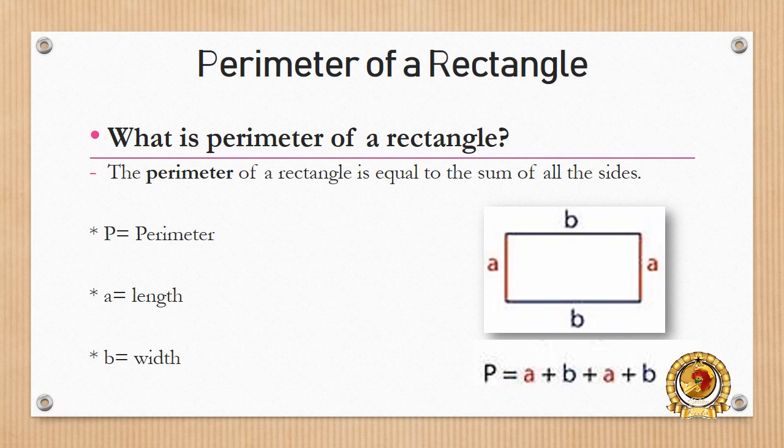To find the perimeter, P which stands for perimeter is equal to a plus b plus a plus b. A stands for the length and b stands for the width. Width means how wide something is.